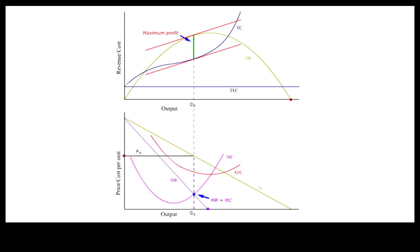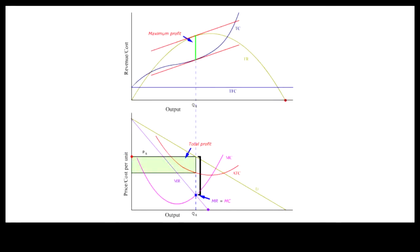At the maximum profit output Q pi, P pi is greater than MC. If buyers are willing to pay more than the MC of producing Q pi, why not charge less and produce more? The firm could expand output from Q pi to Q2 and charge a price P2, which is equal to MC. But the profit would be smaller than when MR is equal to MC.